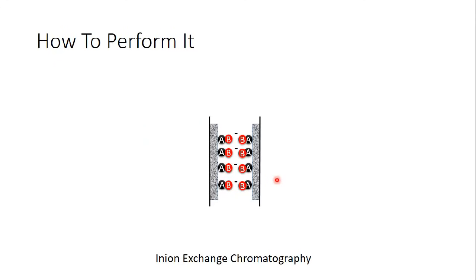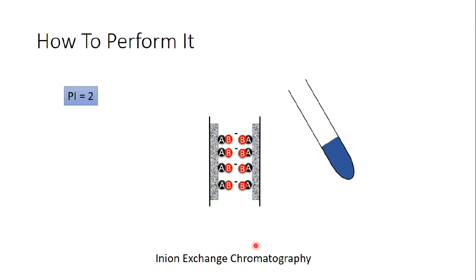Now let's see how to apply ion exchange chromatography. Let's say we choose anion exchange chromatography. We have a sample containing proteins, and the protein of interest has a pI of 2. We should choose the right pH in order to separate our protein from the others. If we apply a pH of 2.3 — which is higher than the pI of our protein — then by the rule of thumb our protein will be negatively charged.